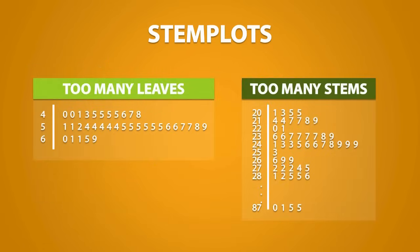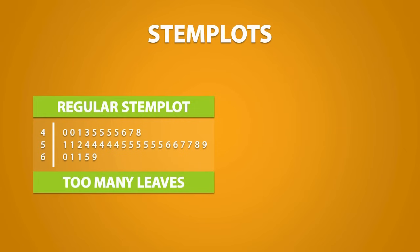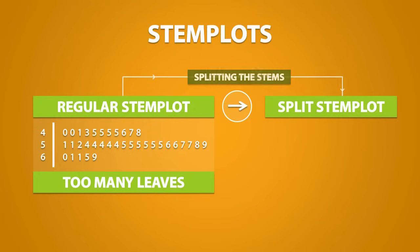Depending on the dataset we are working with, sometimes we can get stem plots with too many leaves and we can get stem plots with too many stems. When this happens, we might not get a nice picture of the distribution and as a result, we may not be able to get much information out of it. If we have a regular stem plot with too many leaves, we can convert it into something called a split stem plot. This conversion is called splitting the stems.